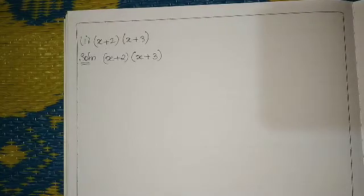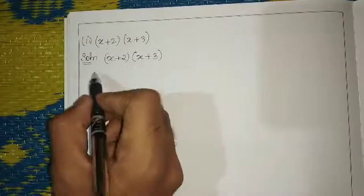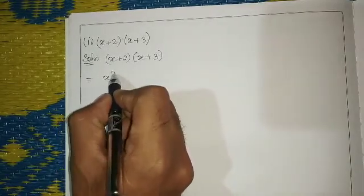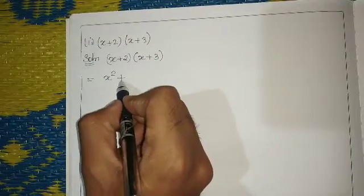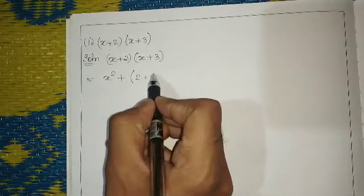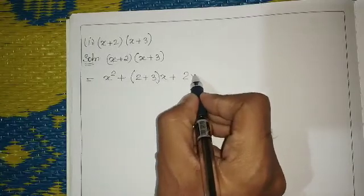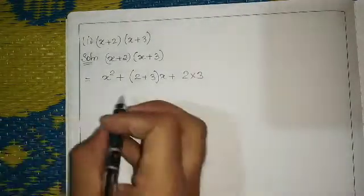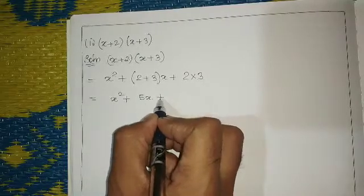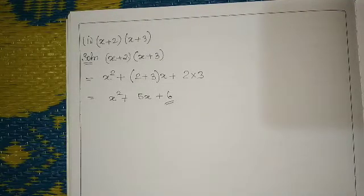Using the distributive property: the two x terms multiplied give x square, then we write plus, then the two constants 2 plus 3, then again x, then plus the product of the constants 2 multiplied by 3. The final answer will be x square plus 2 plus 3 x plus 6. This is the solution for the first question.